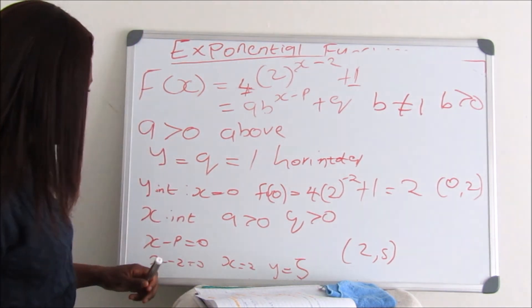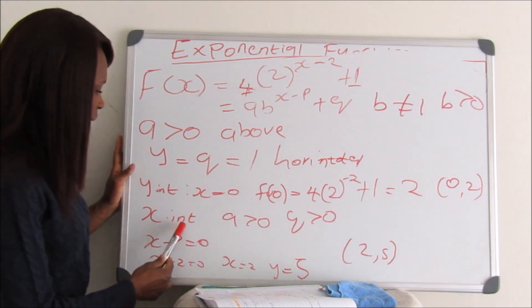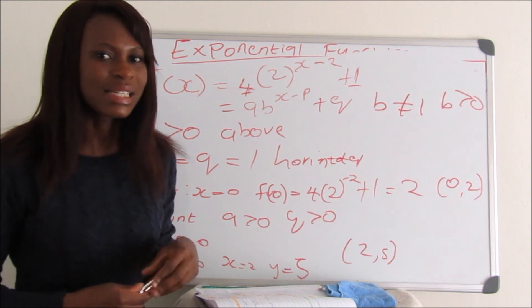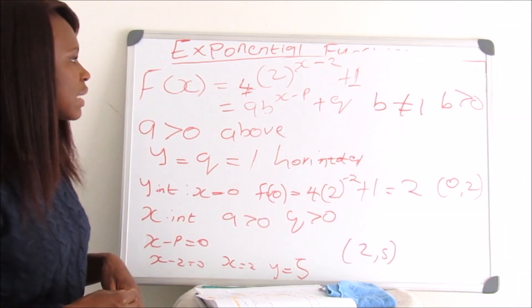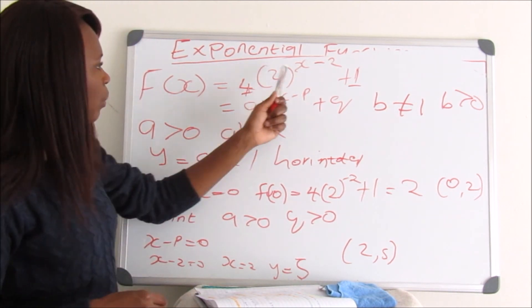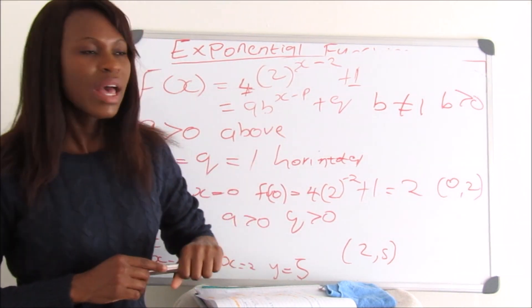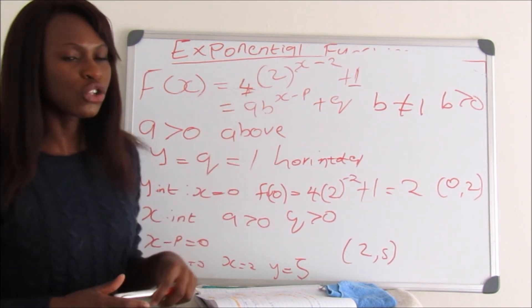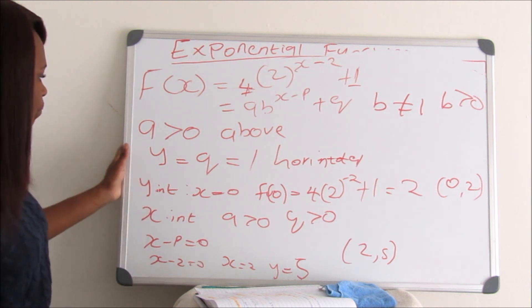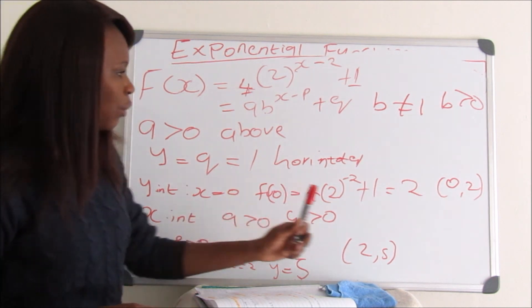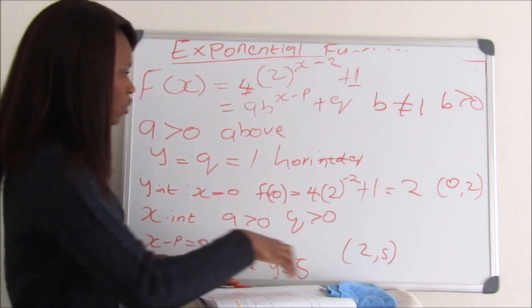We found our Y-intercept by making X equal to 0, which gave us the coordinate (0, 2). For the X-intercept, since A is greater than 0 and Q is greater than 0, the graph lies above the X-axis and there is no X-intercept. Using X minus P equals 0 with P equals 2, we substituted X equals 2 into the equation and got Y equals 5, giving us another point at (2, 5). The points we use to draw the graph are: asymptote Y equals 1, Y-intercept (0, 2), and the point (2, 5).